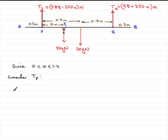So when x equals 0, the tension TP will equal 588 minus 350 times 0, which is simply 588 newtons.